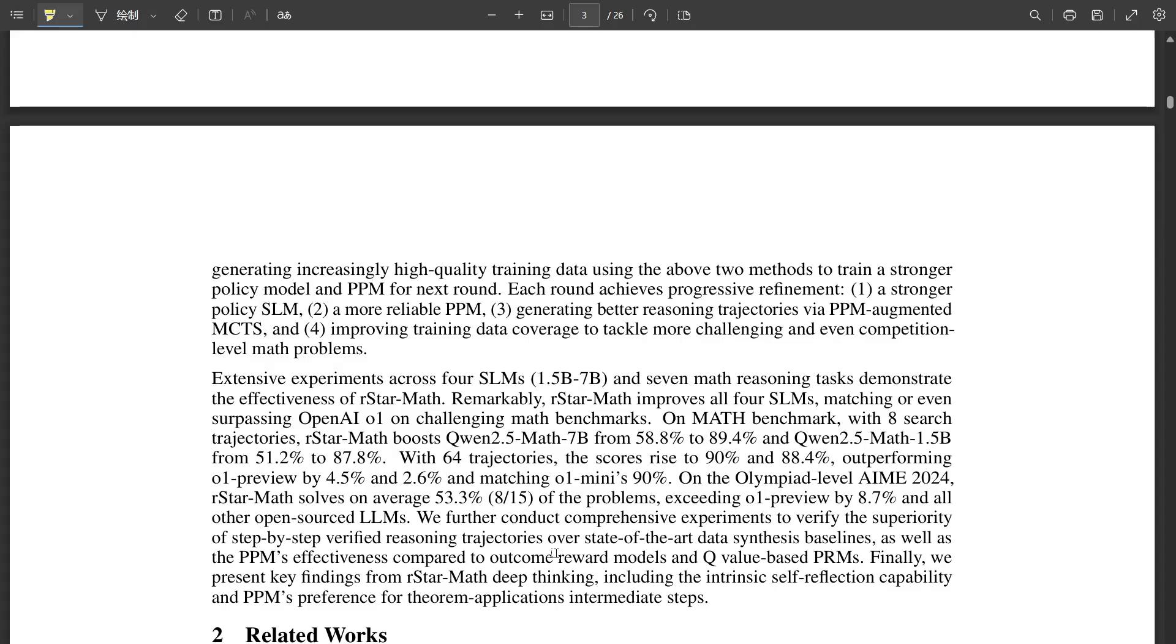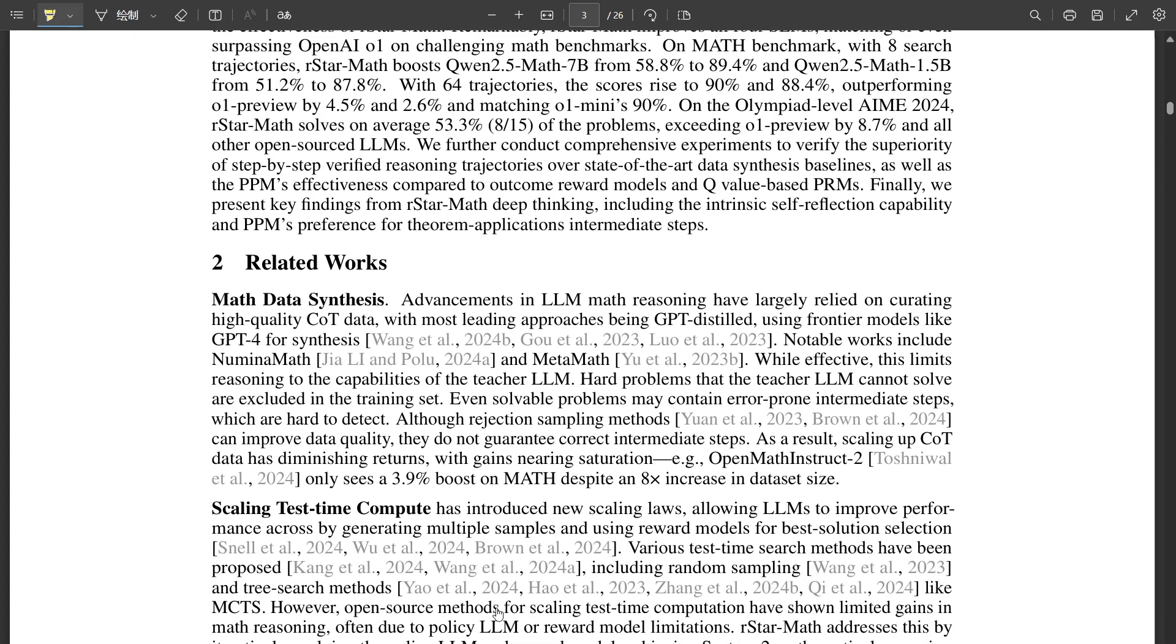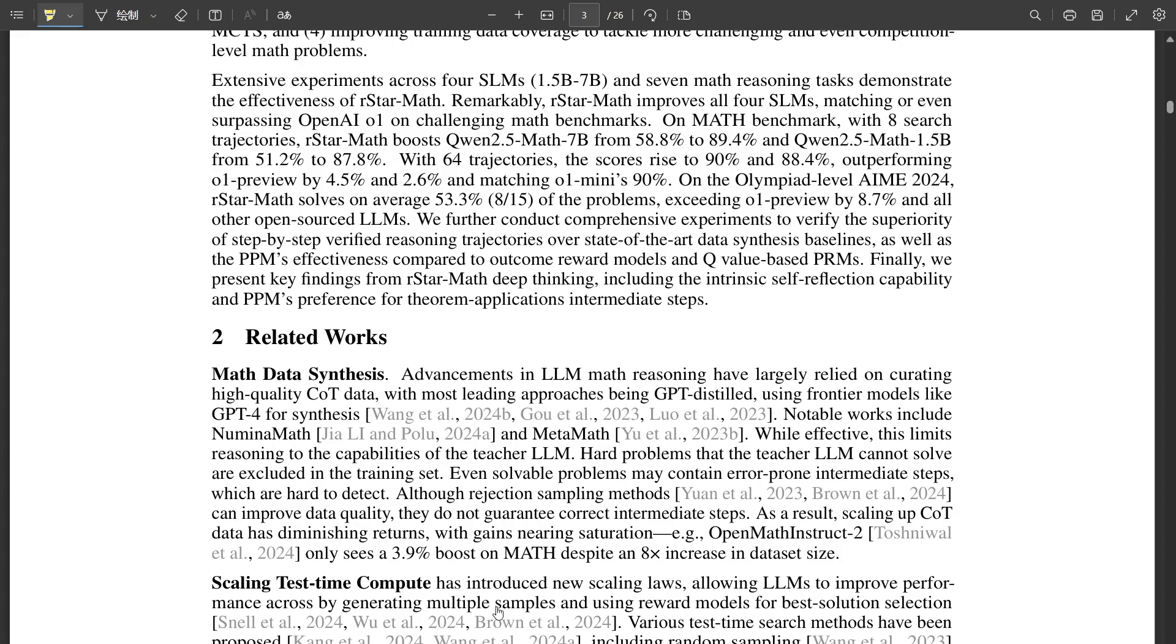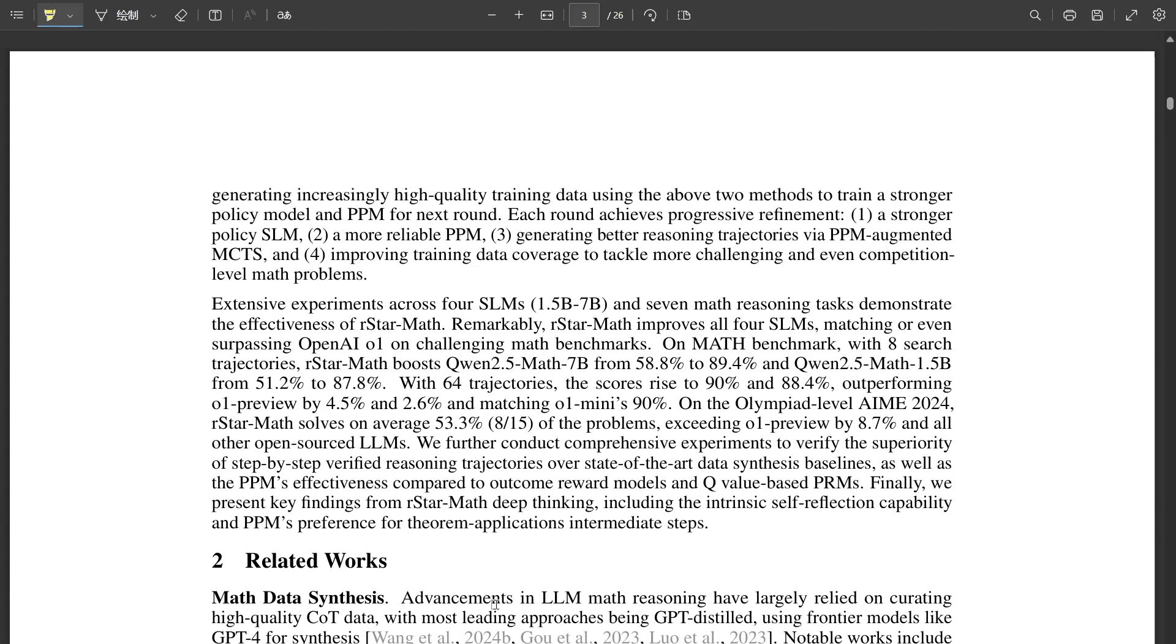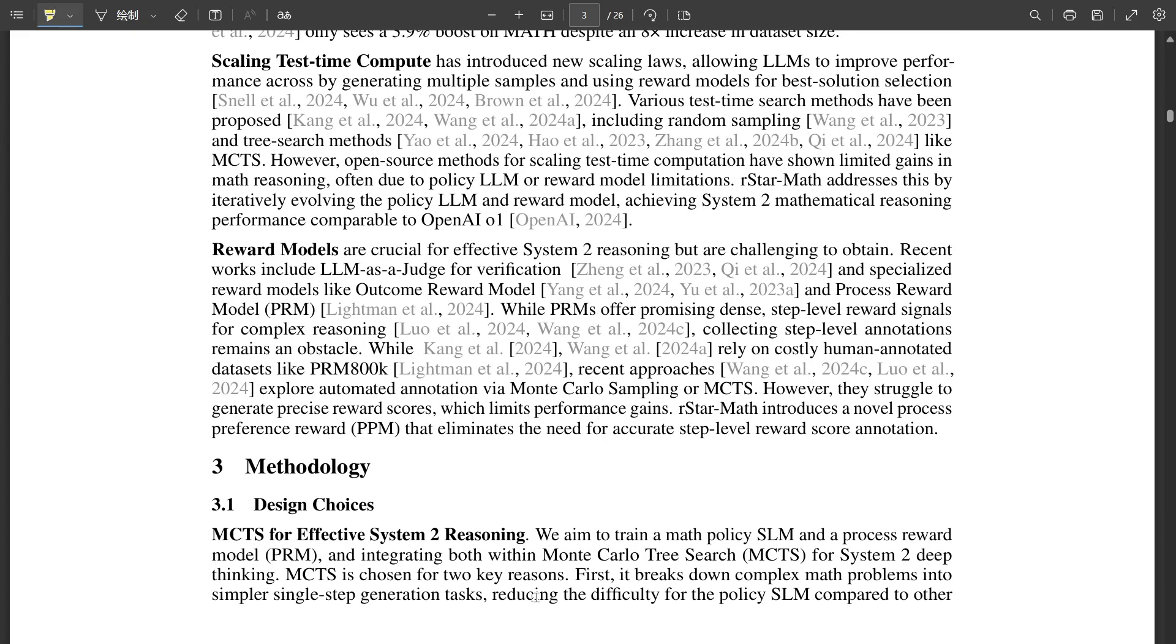So the results of this self-evolution process are pretty impressive. So let's get to those results. How does R-Star Math actually perform in practice? The results are very encouraging. R-Star Math significantly enhances the performance of those smaller AI models, even surpassing much larger, more complex models in some instances. For instance, on a challenging benchmark called MATH, R-Star Math boosted the accuracy of a 7 billion parameter model from 58.8% to a remarkable 90%. It even outperformed OpenAI's powerful O1 preview model on this particular benchmark.